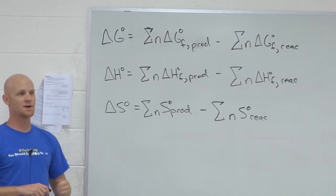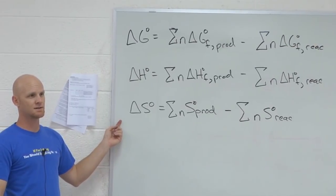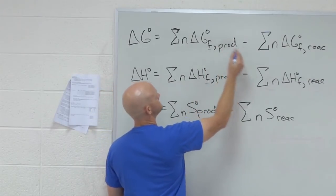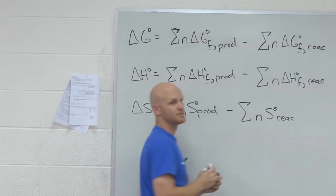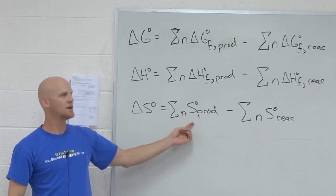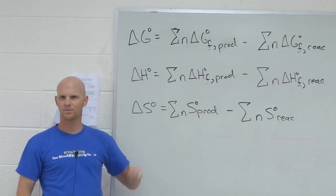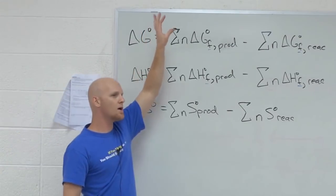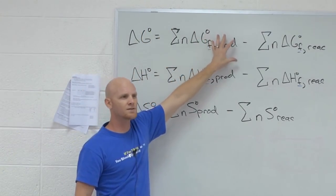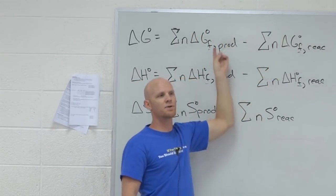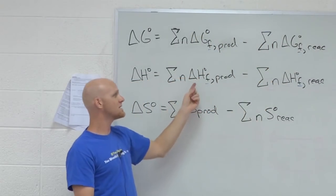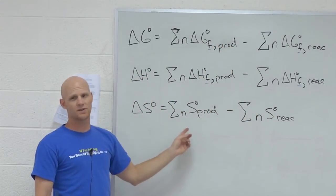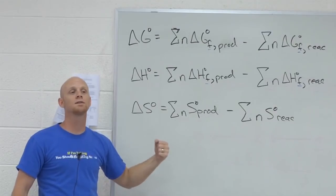Delta S. So, why delta S? That's the difference in the equations. Notice there's no F. What does that F actually stand for? Formation. So, in this case, you add up all the delta G's of formation of the products, and add up all the delta G's of formation of the reactants, and then you do products minus reactants. You do the same thing for delta H. We use these special formation reactions, but for delta S, we typically don't use those formation reactions because we don't need to.